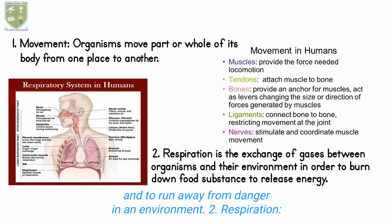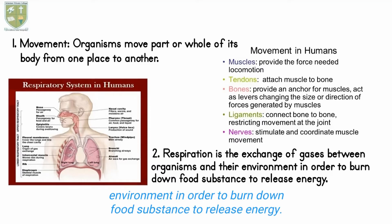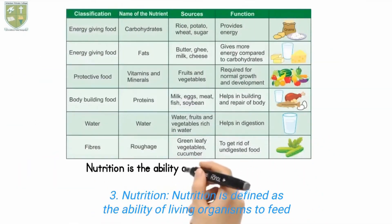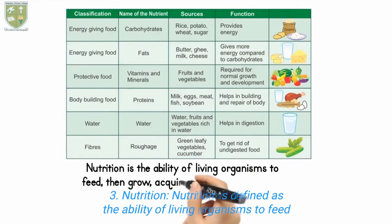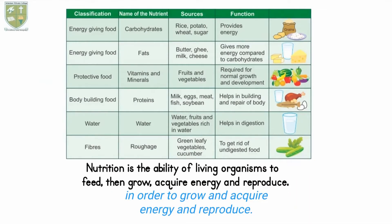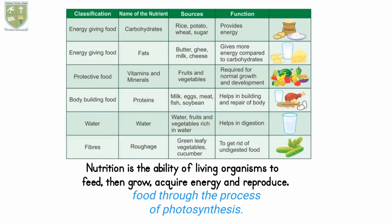2. Respiration. Respiration is defined as the exchange of gases between organisms and their environment in order to burn down food substances to release energy. 3. Nutrition. Nutrition is defined as the ability of living organisms to feed in order to grow, acquire energy, and reproduce. All green plants manufacture their own food through the process of photosynthesis.